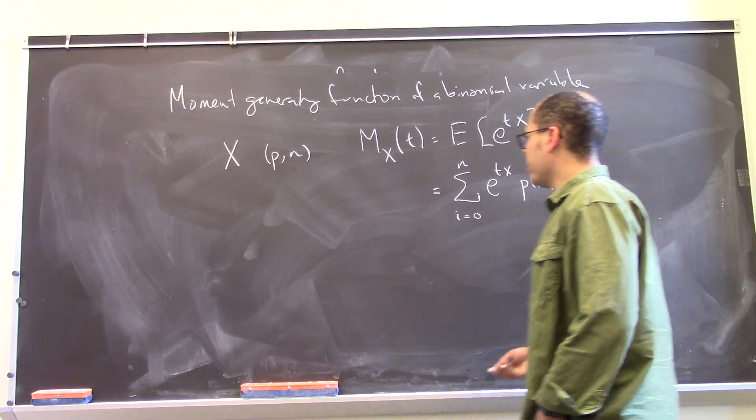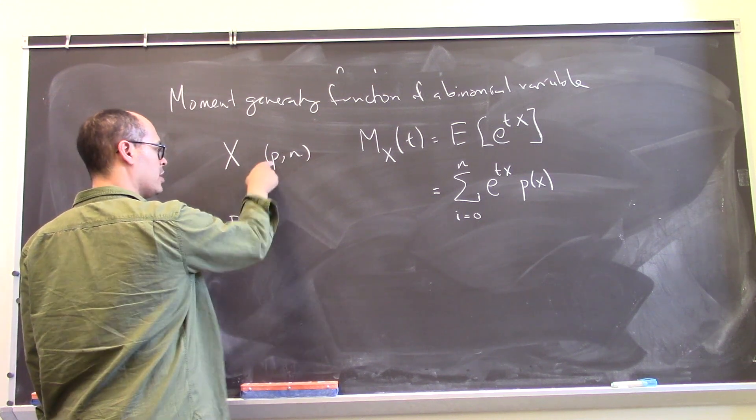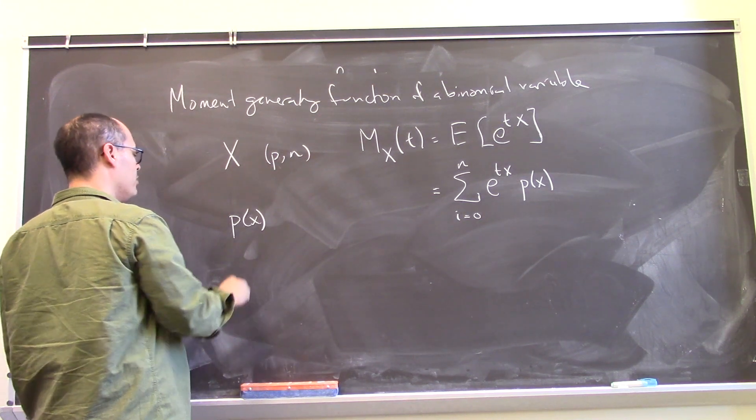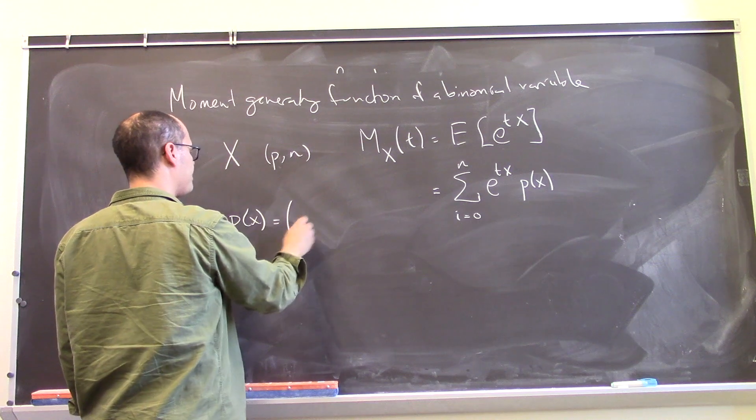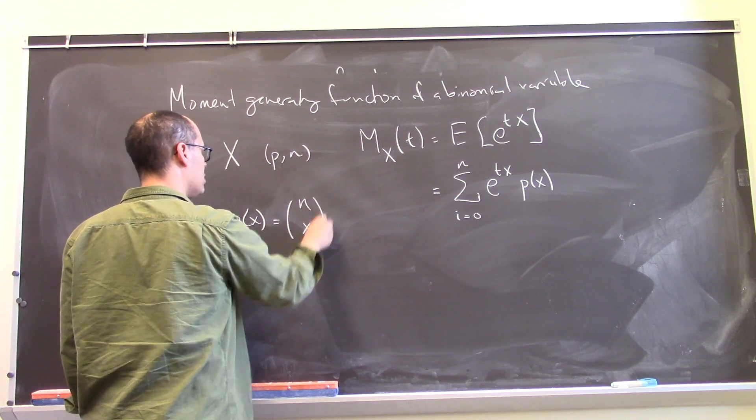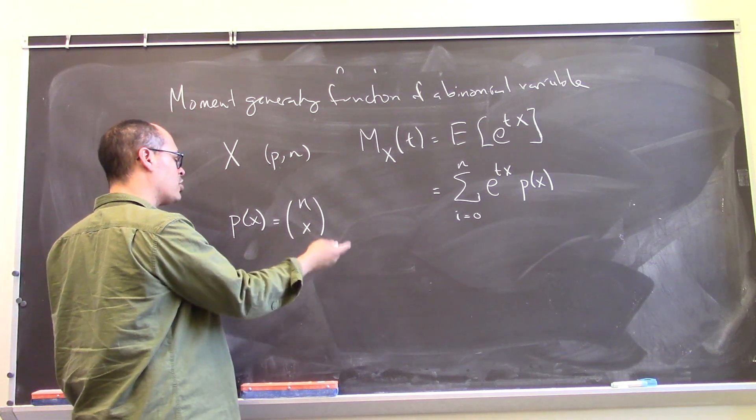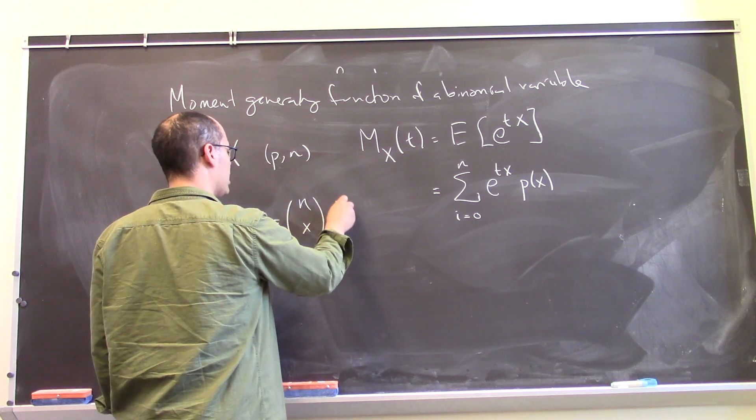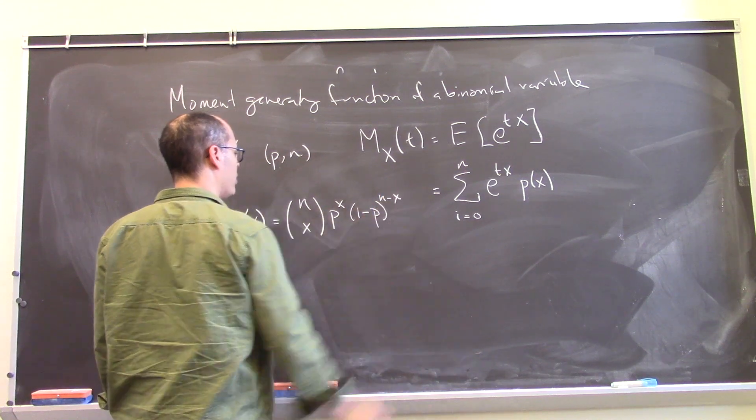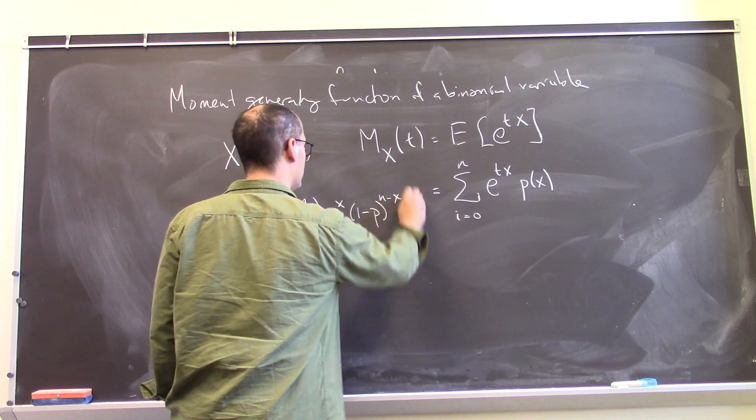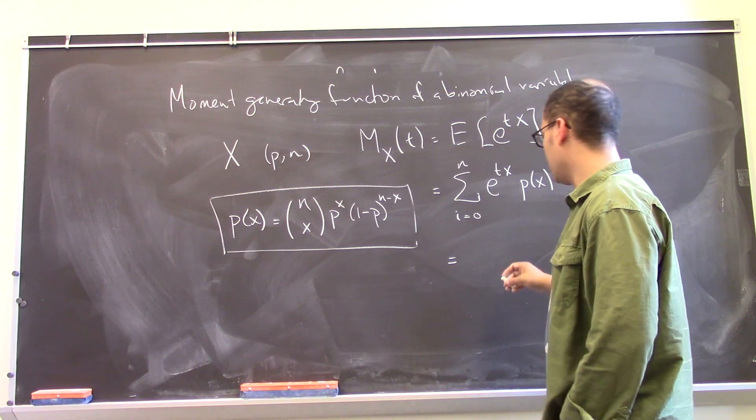And now what is p of X for the binomial variable? So p of X, these are two different p's of course. This is the probability mass function. So p of X is n choose X. So we're saying which of the n trials, which X of the n trials gives successes, p to the X for those, and 1 minus p to the n minus X for the ones that aren't successes. So this is our particular mass function.